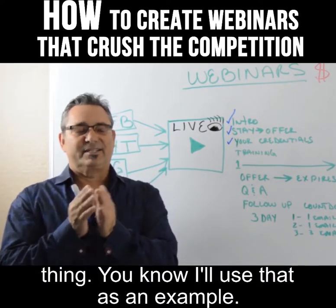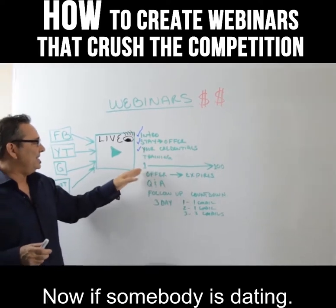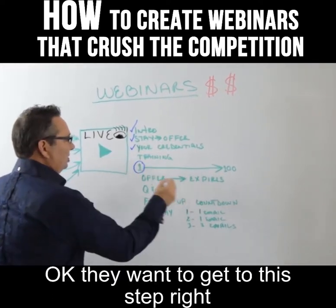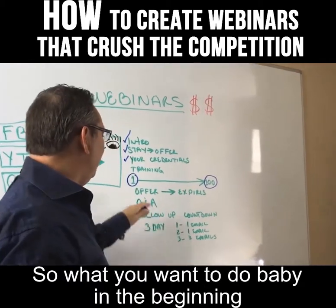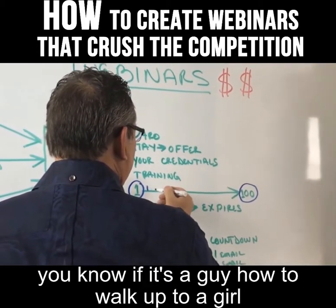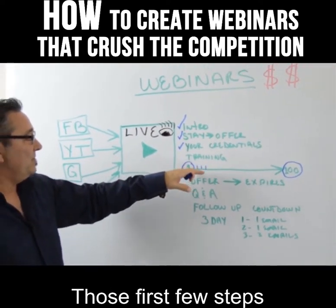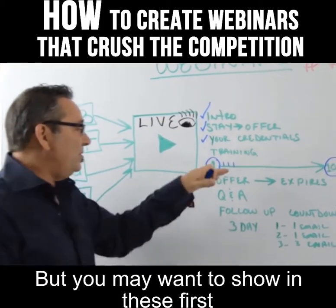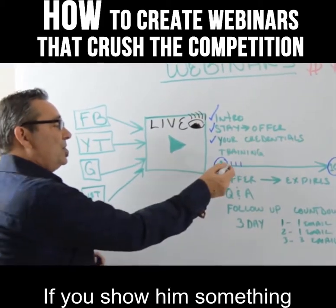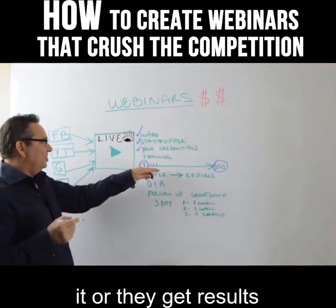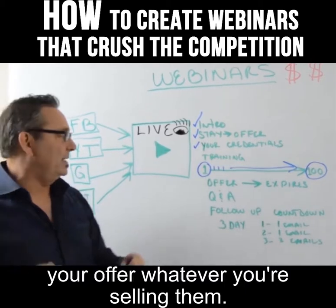Then you get into the actual training. I'll use dating as an example. If someone is at the beginning stages of dating and wants to eventually get married, there are maybe 100 steps to get there. Your training covers the first few — like how to walk up to someone, start a conversation, become more attractive. Once they see results from those first steps, they'll realize they need the rest of the steps to reach their goal, and those remaining steps become your paid offer.